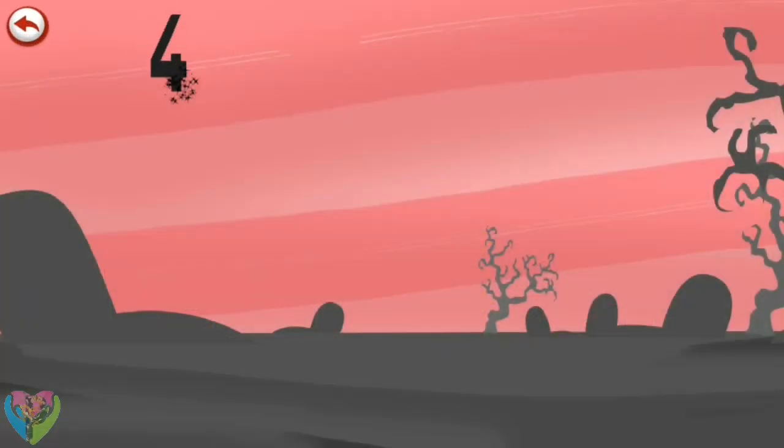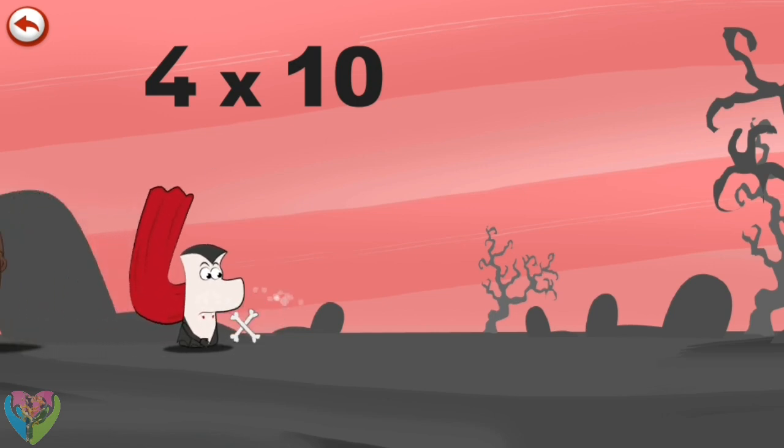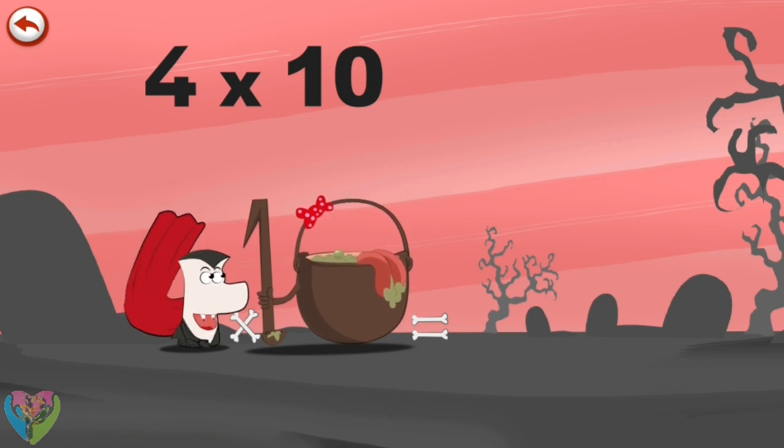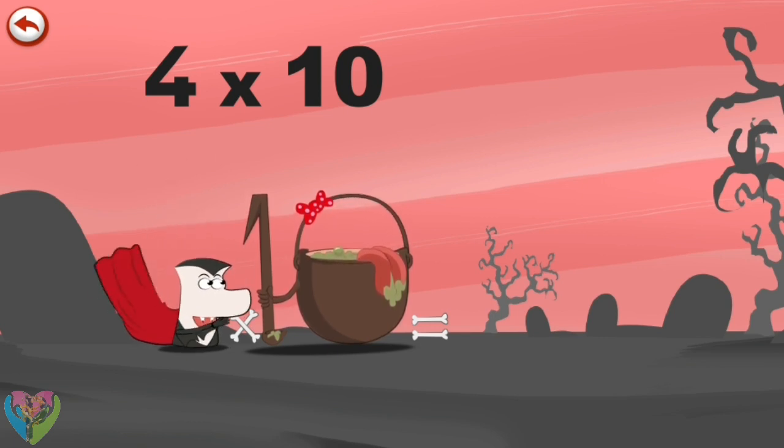What's the story of 4 times 10? When Vamp4 meets the potion Magi-10, it makes him very, very hungry. He dives headfirst into the cauldron.